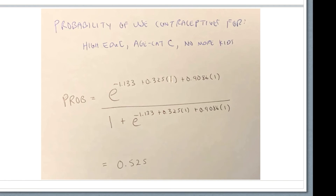Working that all out gives 0.525 — or 52.5%. So based on this model, we'd estimate there's about a 52.5% chance a woman with high education in age category c who does not want more kids will be using contraceptives.